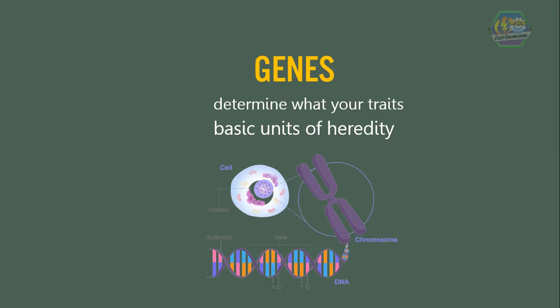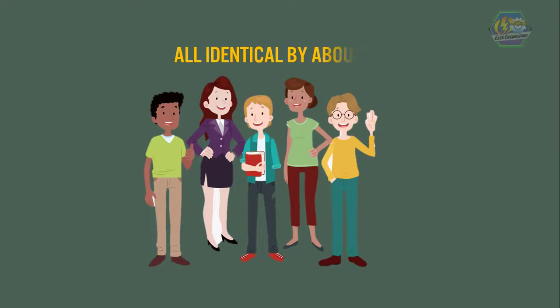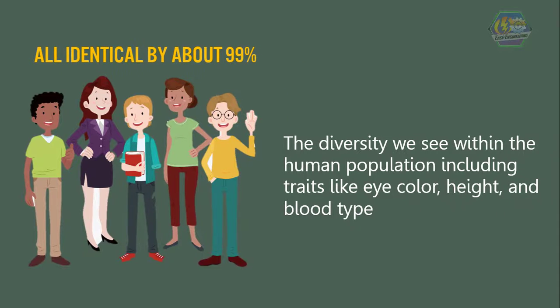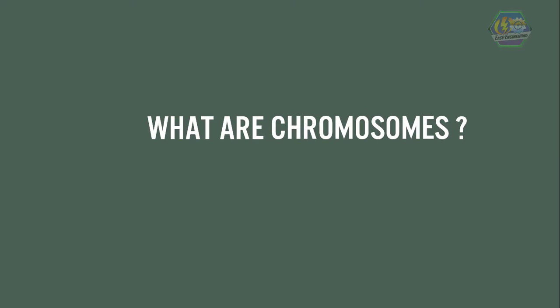Fun fact, learners: did you know that we humans are all identical by about 99%? The diversity we see within the human population — including traits like eye color, height, and blood type — is due to genetic differences that account for less than 1%. Now, going back to the topic: what are chromosomes?